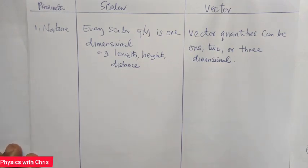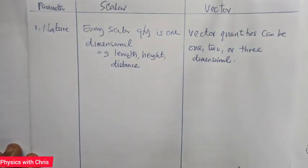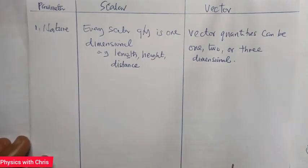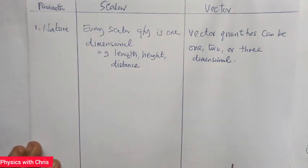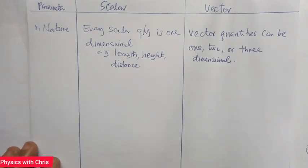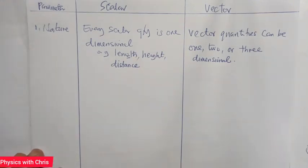Now let's start by looking at nature. Every scalar quantity is one dimensional — that is to say, you cannot resolve a scalar quantity into two different directions. The length of a body is measured along one direction, that is one dimensional.